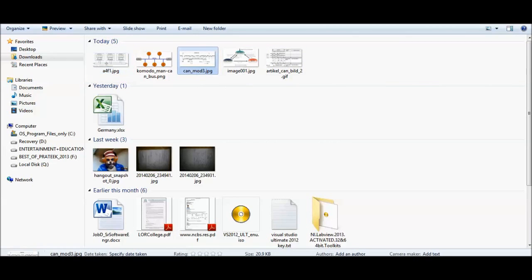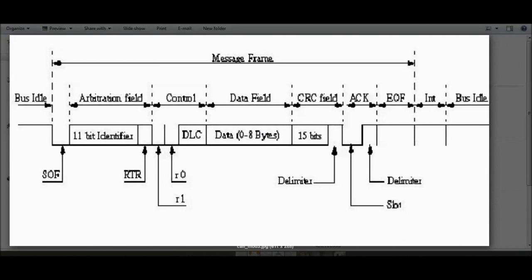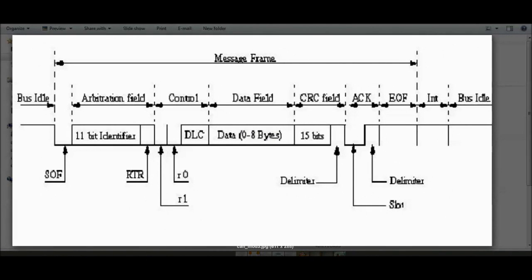Now we'll look into the CAN frame structure. In CAN, 0 is considered a dominant bit while 1 is considered a recessive bit. The first bit is called the Start of Frame (SOF), which is dominant. Then there's the CAN identifier — a message identifier of either 11 bits or 29 bits. An 11-bit identifier is the standard frame, while 29-bit is the extended frame.